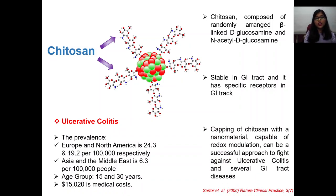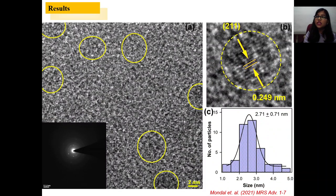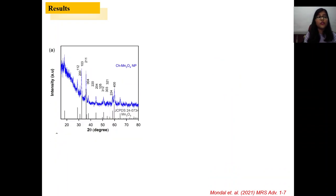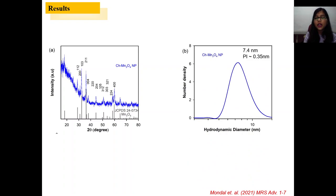So we have started working with this nanoparticle. You can see here the TEM image, it is crystalline and the size of the nanoparticle is 3 to 4 nanometer. We have confirmed from the XRD study that yes it is Mn3O4 nanoparticle. And the hydrodynamic diameter, that means the core of the nanoparticle and the ligand, the size of the whole nanoparticle is about 7 to 8 nanometer.